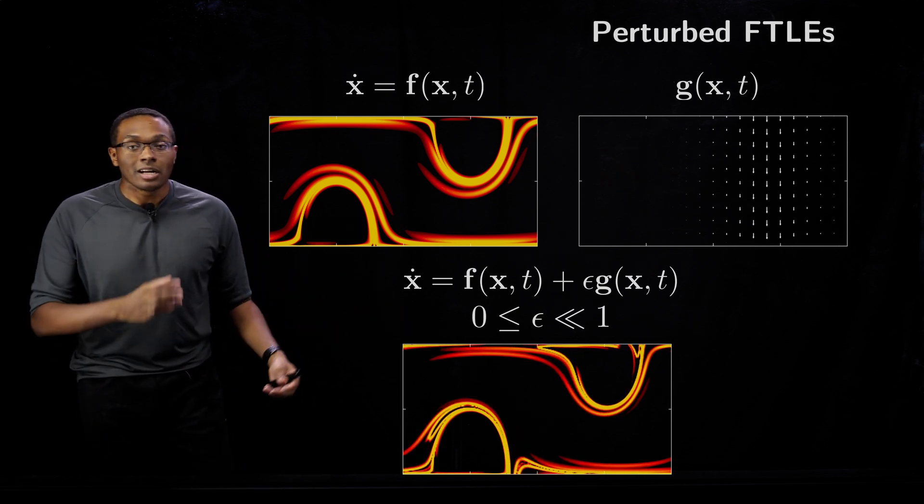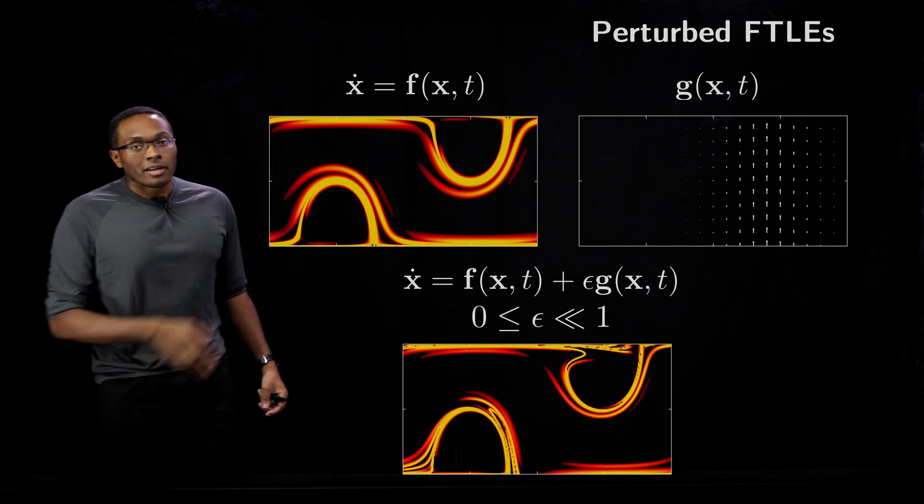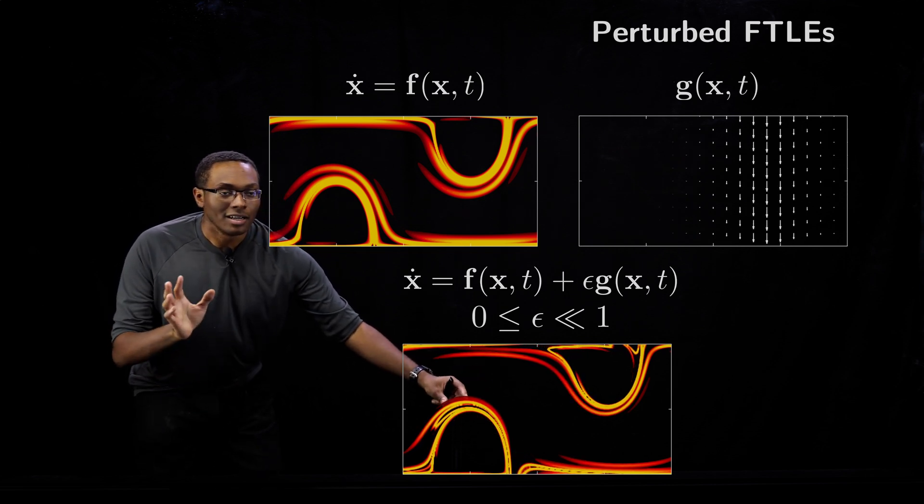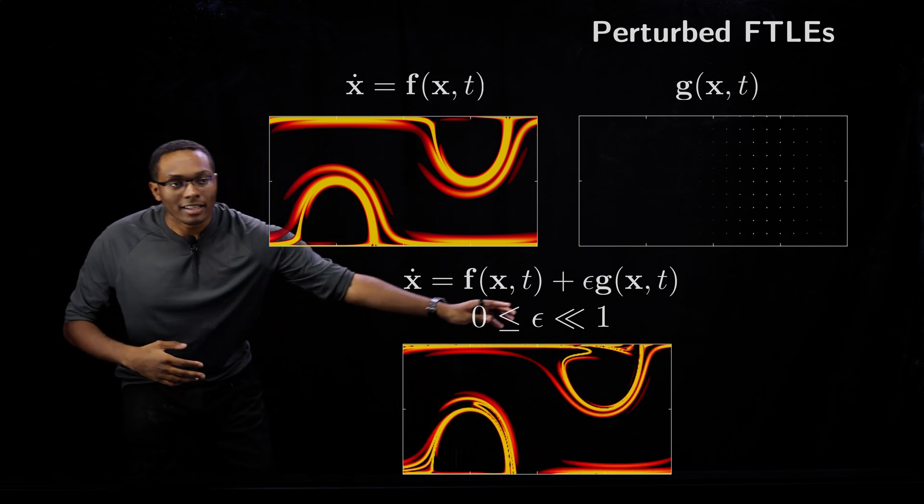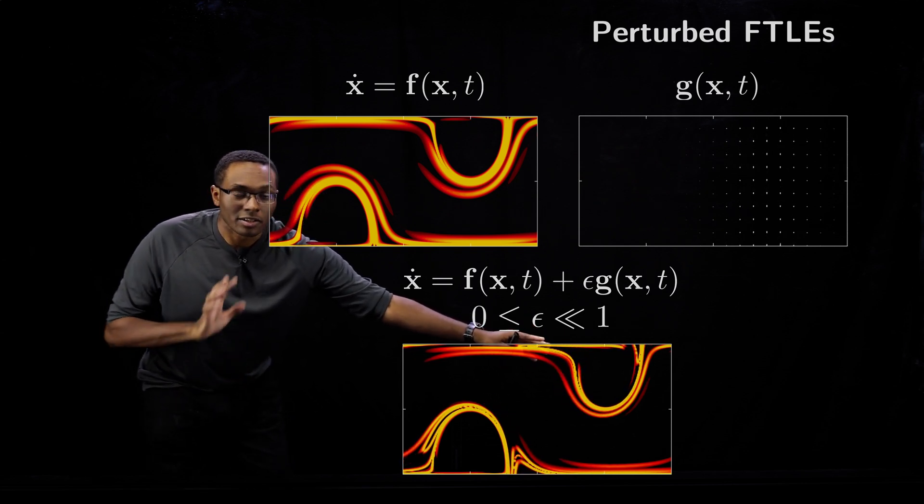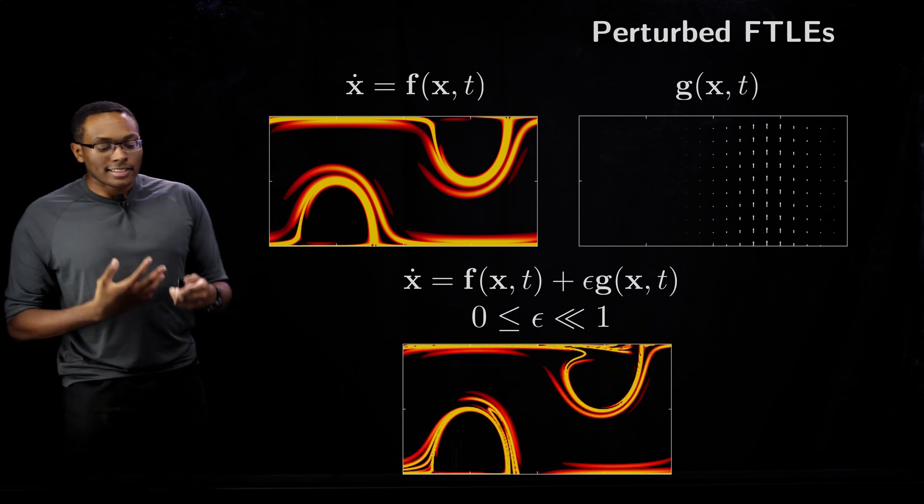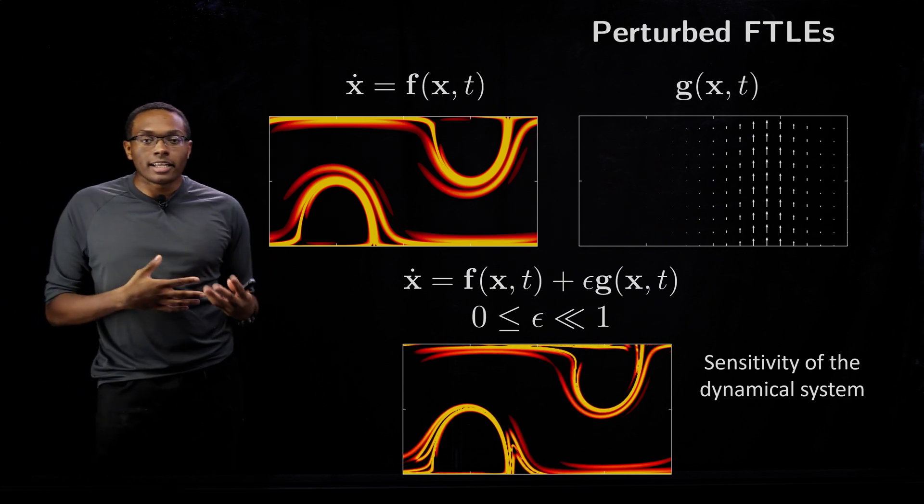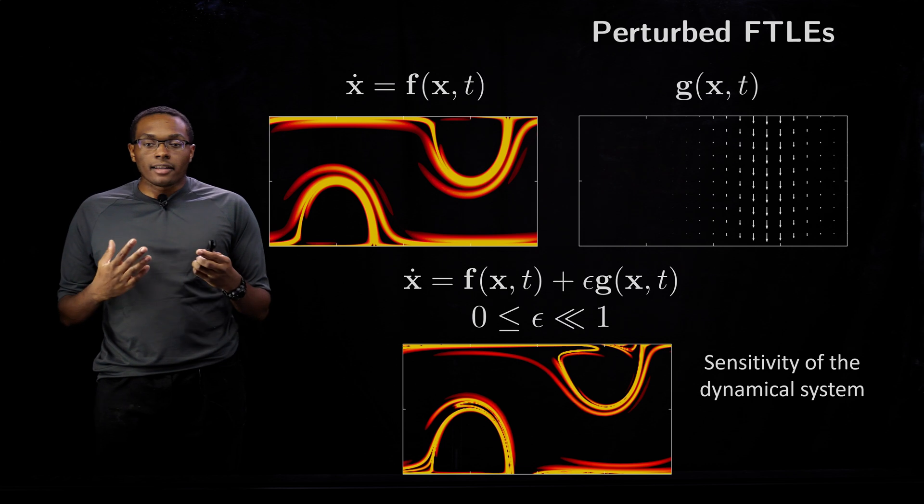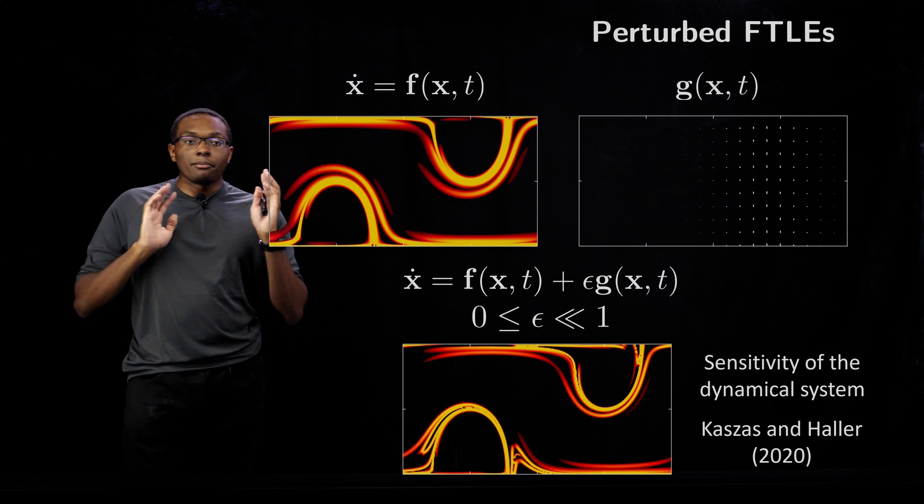If we compute the FTLE field of this combined system, we get a new different type of structure that looks really similar to the original but now we get these additional horseshoe structures forming and coming off of this U-shape structure, and additional deformation from the structure on the far right. We thought this was really interesting and wondered, was there a way to characterize the sensitivity of these LCS structures with respect to the dynamical system G? It turns out that Casas and Haller named it mode sensitivity.